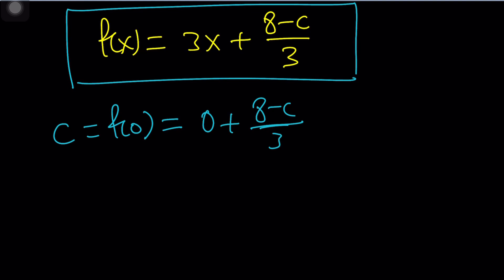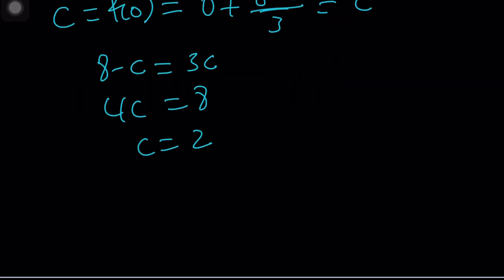So, from here, what do you get? You get this equals c. 8 minus c equals 3c. Put the c's on the same side. 4c equals 8. And then c equals 2. Hopefully, you see what I see.